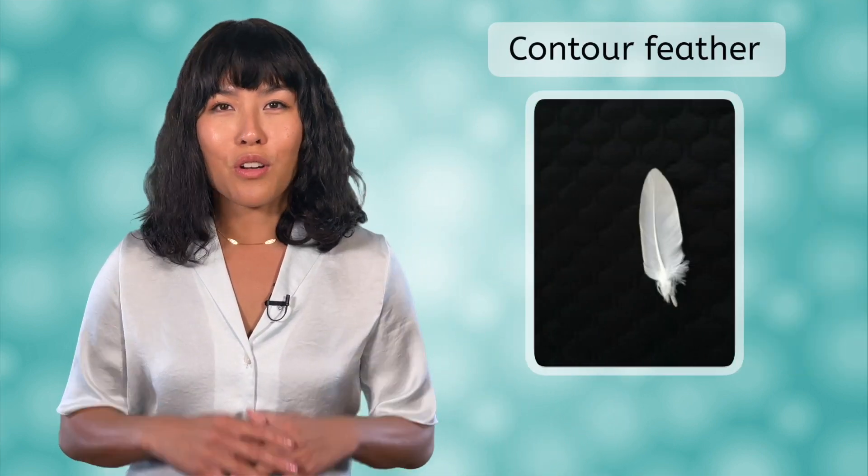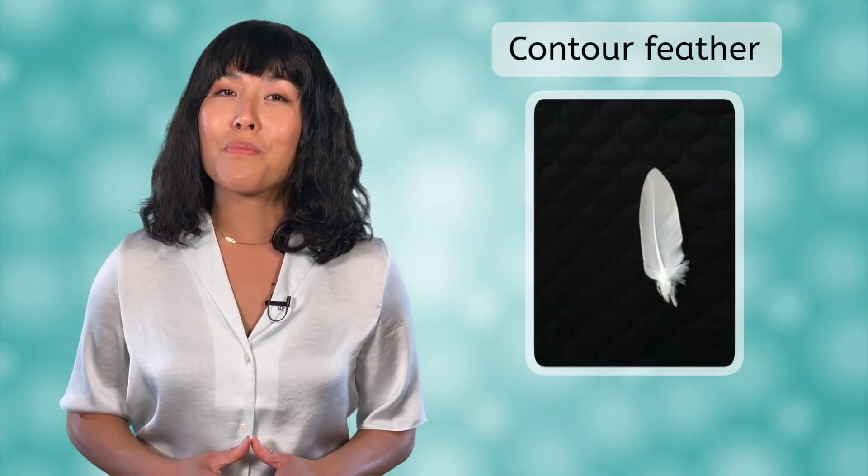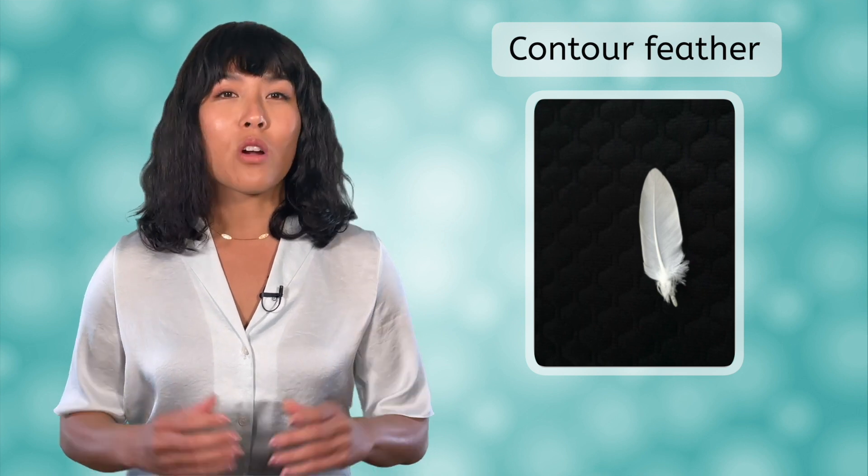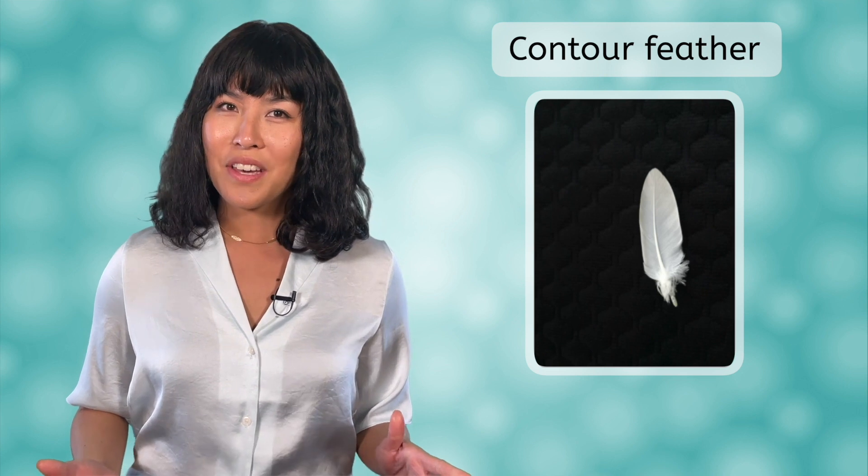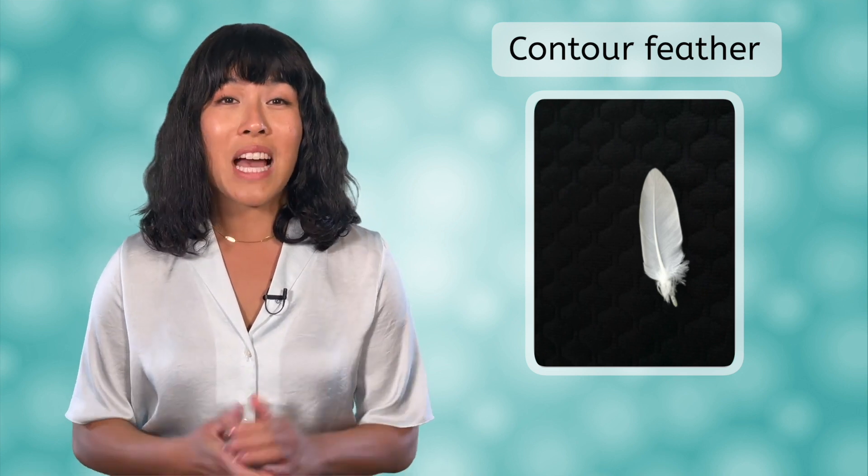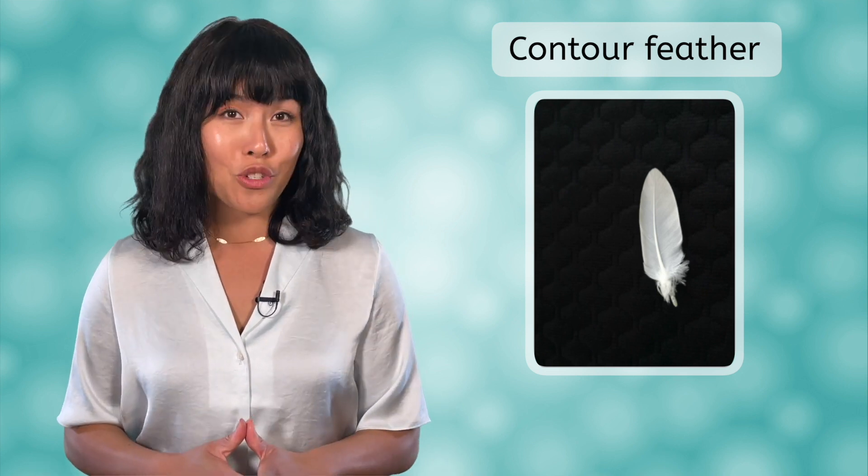There are two types of feathers: contour feathers, which help with flight, and down feathers, which keep the bird warm. Contour feathers are smooth and help to streamline the body surface. These feathers are strong and light and are located on the tail and wings. Birds use contour feathers to help them steer and stay in control when flying.